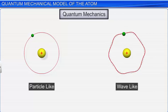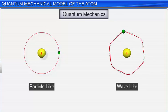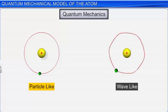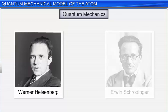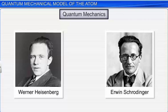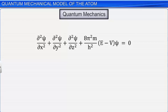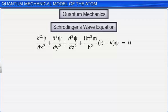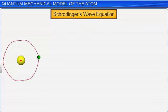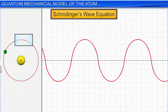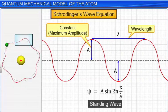Hence, quantum mechanics is a theoretical science that helps to study the motions of microscopic objects that have observable wave-like and particle-like properties. Quantum mechanics was developed independently by Werner Heisenberg and Erwin Schrödinger in 1926. The fundamental equation in quantum mechanics is Schrödinger's wave equation. In quantum mechanics, the mathematical expression which describes the wave motion associated with a particle is popularly known as the Schrödinger wave equation. It gives the probability of finding an electron at different points in an atom. The Schrödinger wave equation is obtained by differentiating the equation for the standing wave of an electron in the hydrogen atom.